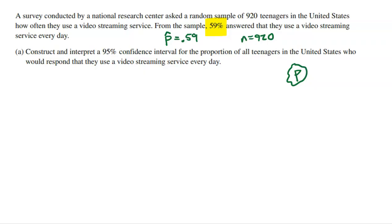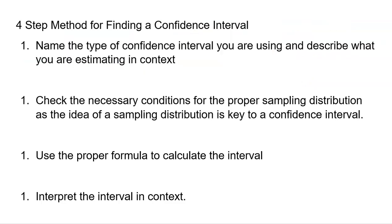For a confidence interval, I follow a four-step procedure. Step one: name the type of confidence interval you are using and describe what you are estimating in context. There are several types of confidence intervals, so we have to make sure we name the specific one we need and say in context what it is we're actually trying to find.